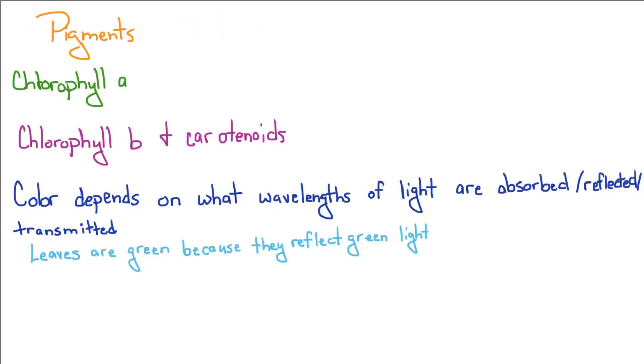There are several different pigments involved with photosynthesis. You've got chlorophyll A which is the main pigment, chlorophyll B and carotenoids are accessory pigments, and the color depends on what wavelengths of light are absorbed or reflected or transmitted. For example, leaves are green because they reflect green light. White flowers reflect all colors of light and a black flower would absorb all colors of light.